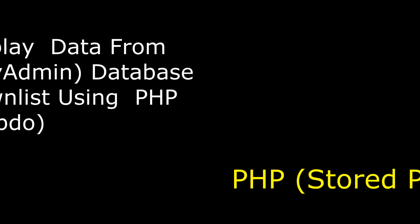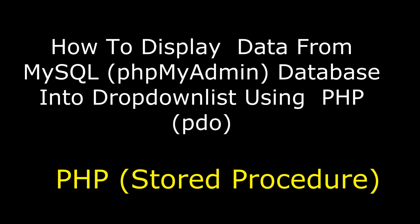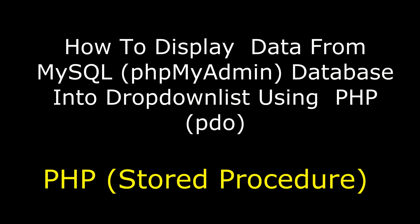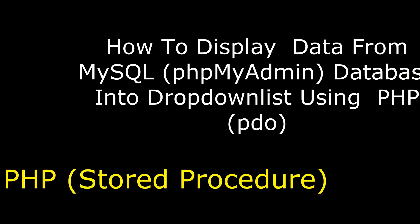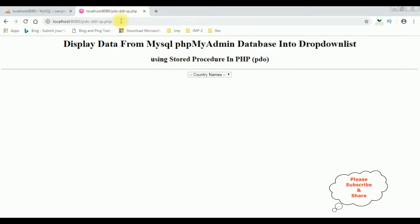Hello friends, welcome to my channel. This is Charan. In this video I will show you in PHP how to display data from a MySQL phpMyAdmin database into a drop-down list control using PDO data objects. Here we got the final output of the code: the header tags, horizontal line, and the select option drop-down list control.